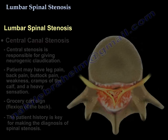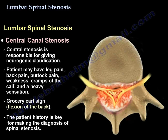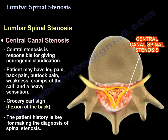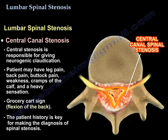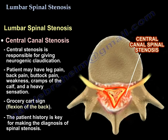Central stenosis is the one that gives you neurogenic claudication. The patient may have leg pain, back pain, buttock pain, weakness, cramps of the calf, and a heavy sensation. The grocery cart sign — flexion of the back — provides relief. History is the key for making the diagnosis of spinal stenosis.